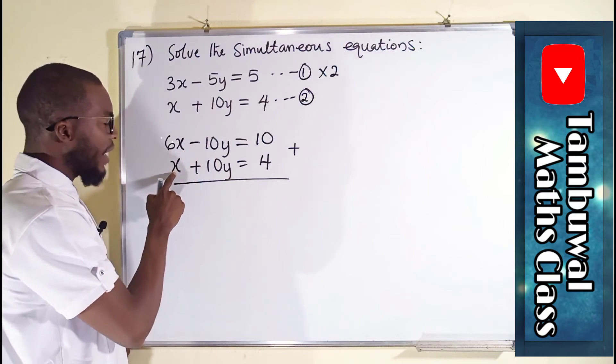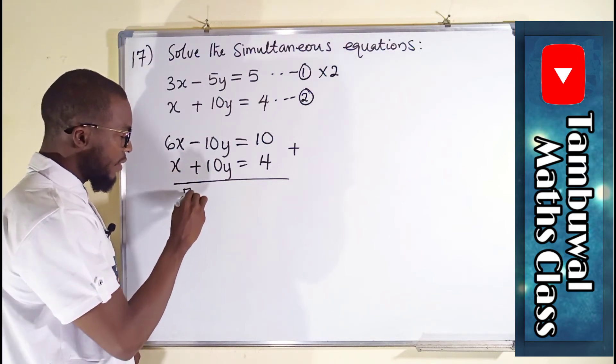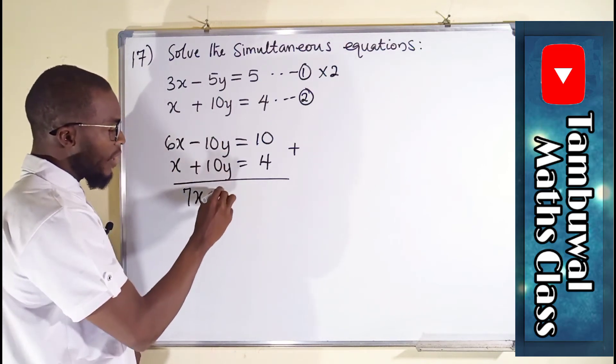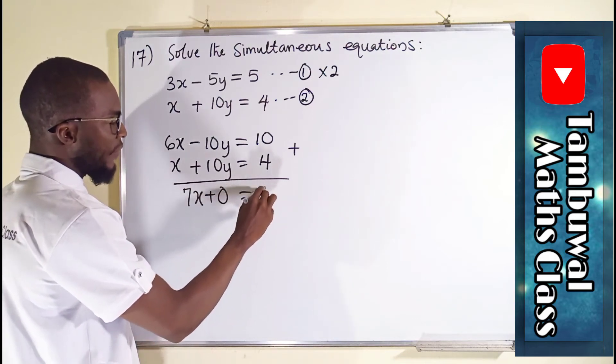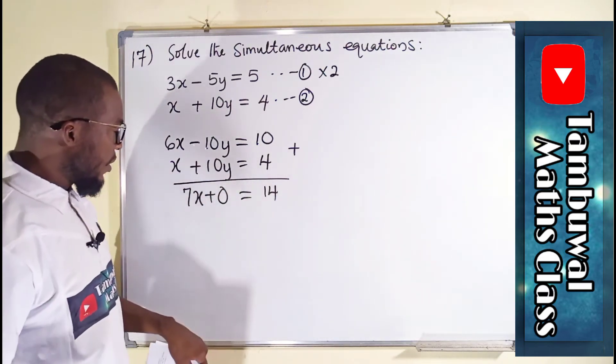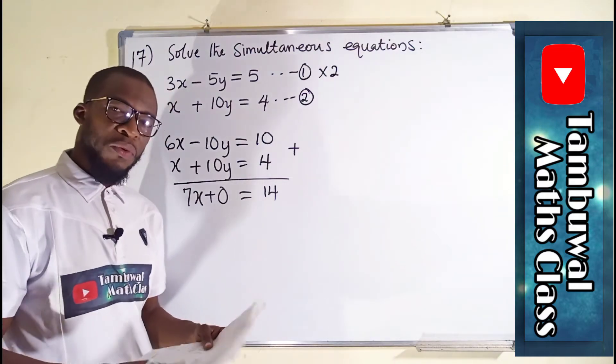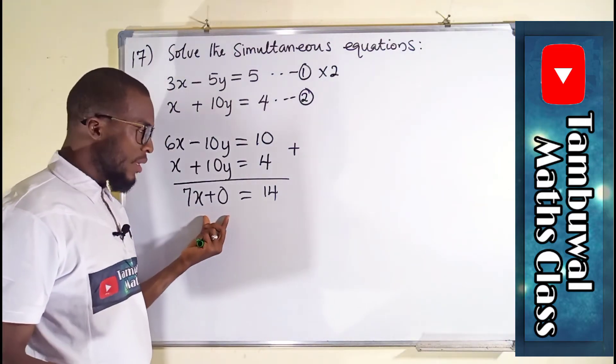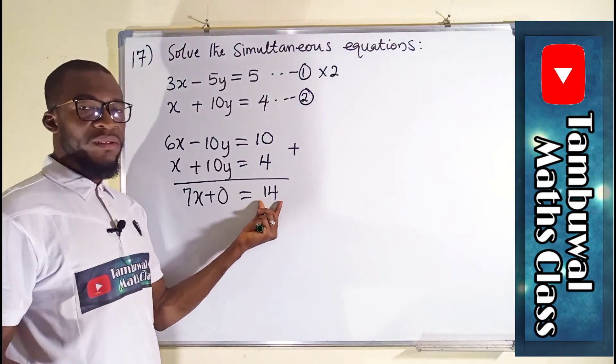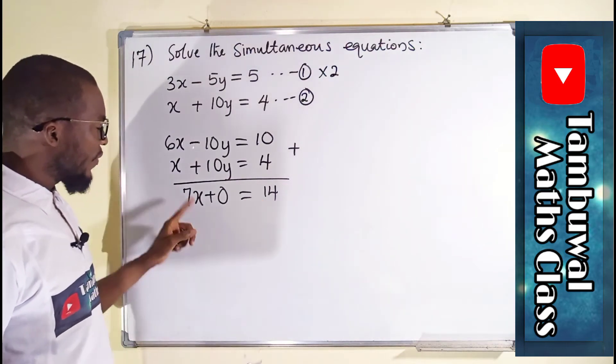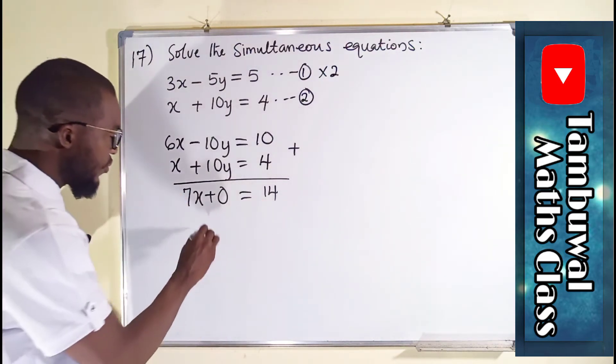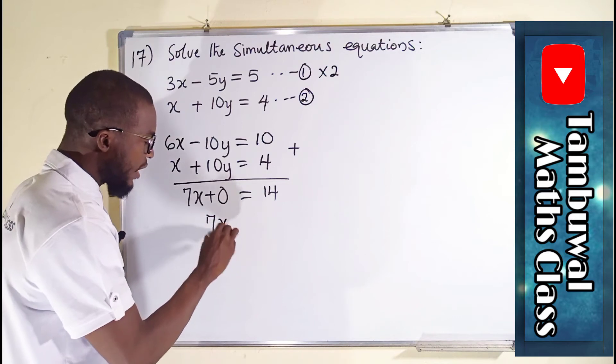6x plus x is 7x. Here we have 0. And here we have 14. So you can see from the left-hand side, we only have 7x. And our constant is now 14. So to find x, all we have to do is to divide both sides by this 7.